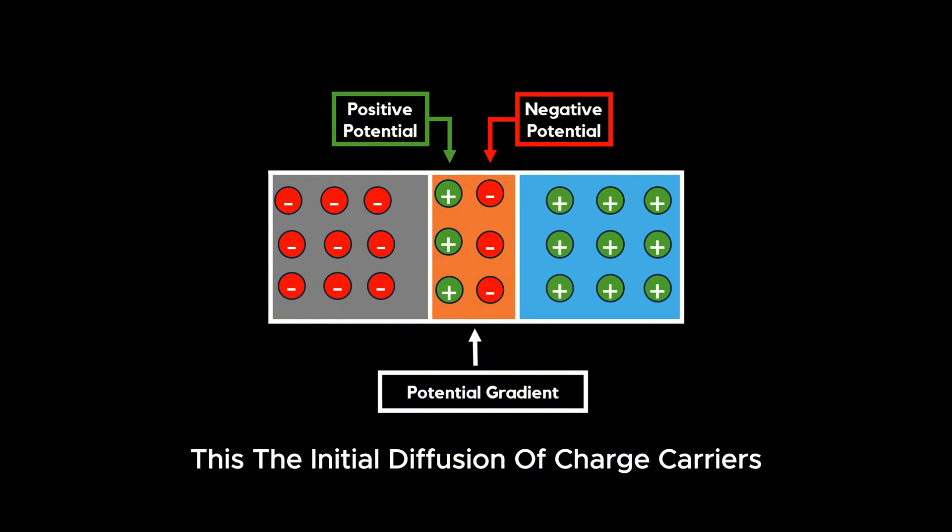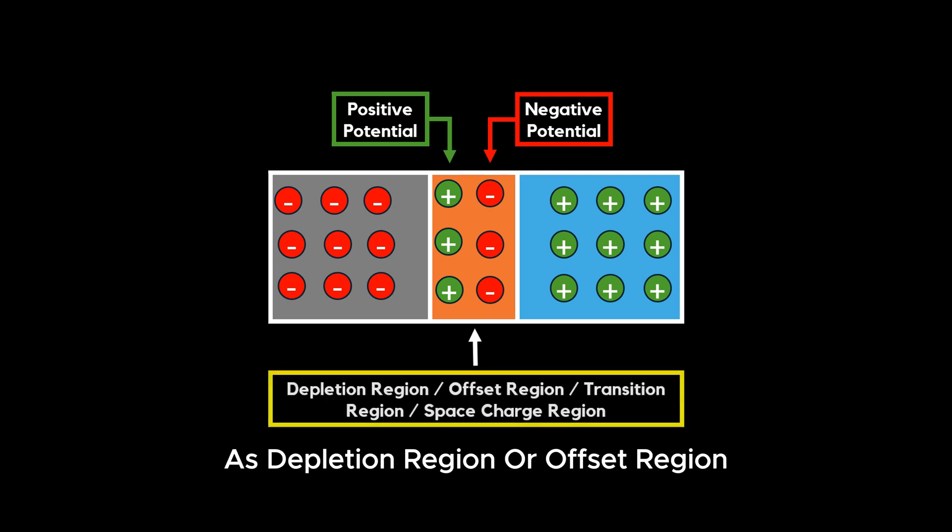Thus, the initial diffusion of charge carriers creates a potential barrier. This potential barrier can be called the depletion region, offset region, transition region, or space charge region.